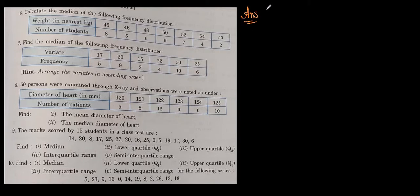Let us start sum number 6. It says: calculate the median. So median is equal to question mark. Weight in the nearest kg is given as 45, 46, 48, 50, 52, 54, and 55, with the respective frequency — that is, number of students — as 8, 5, 6, 9, 7, 4, and 2. Let us work it out.